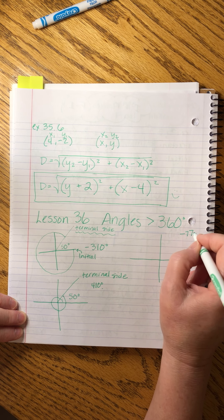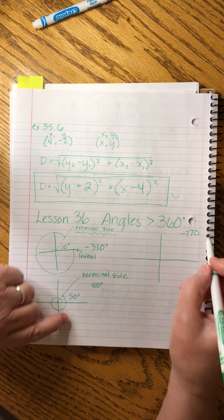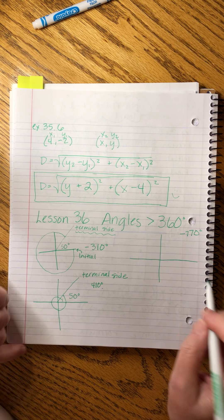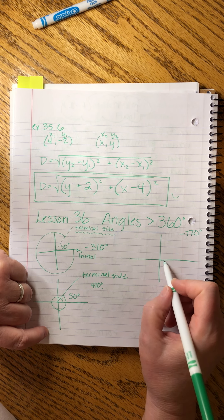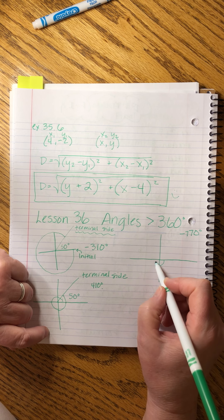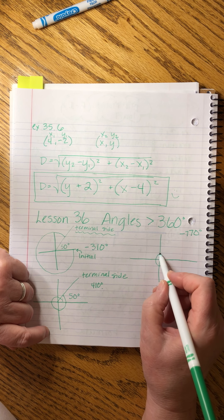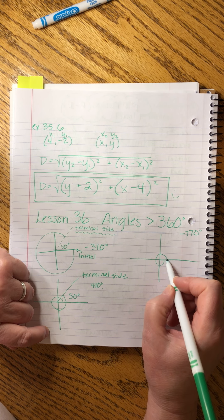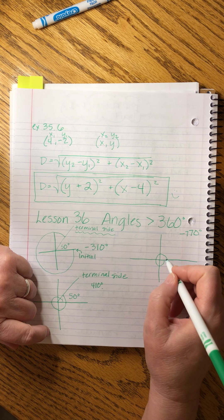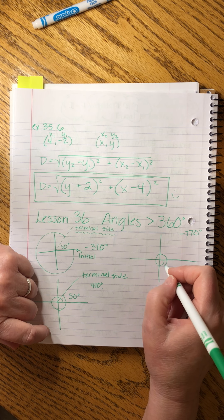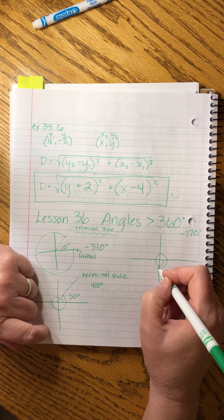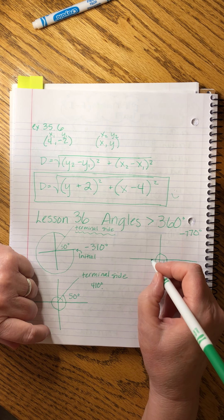We want to do minus 770. So this time we're going down. So we go 90, 180, 270, 360. 360 plus 90 is 450, 540.